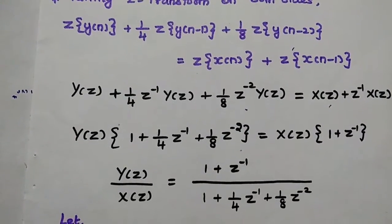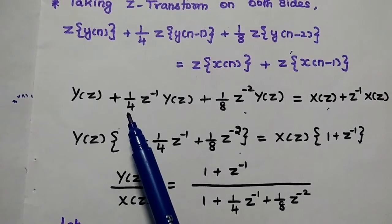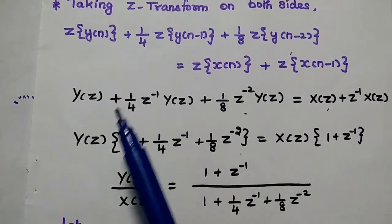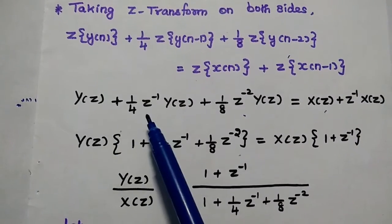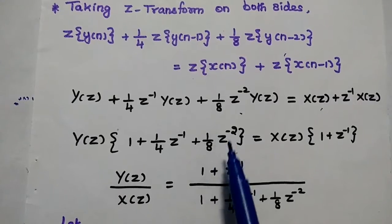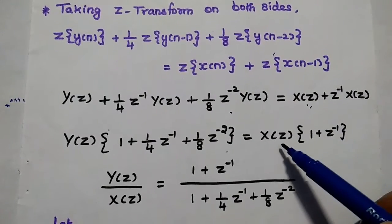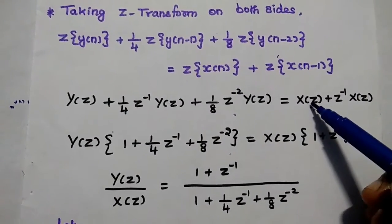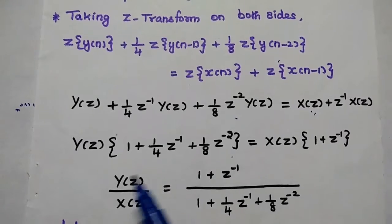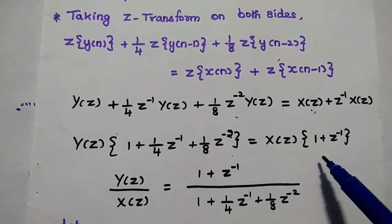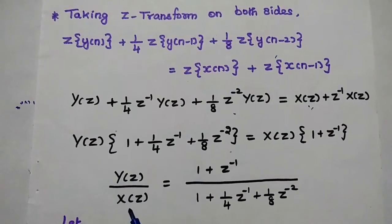In the next step, we take common terms outside the equation. On the left-hand side, Y(Z) is the common term, giving Y(Z)·[1 + 1/4·Z⁻¹ + 1/8·Z⁻²]. On the right-hand side, X(Z) is the common term: X(Z)·[1 + Z⁻¹]. Moving terms across, Y(Z)/X(Z) = H(Z), the transfer function.